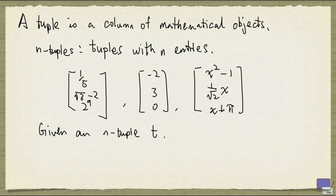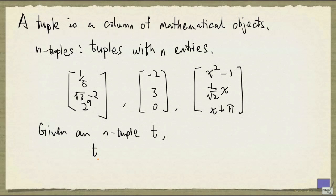Given n-tuple t, we can refer to the entries with an index. For example, ti is the i-th entry of t.